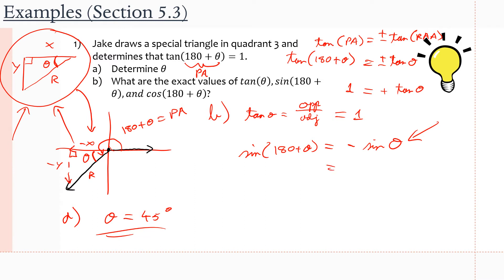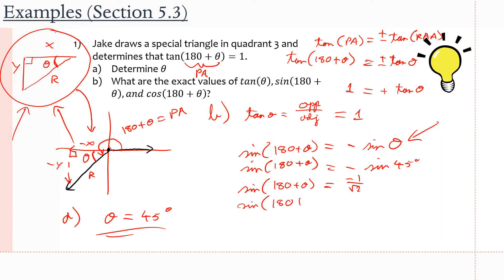So sine of (180 + θ) equals negative sine of 45°. If we remember our special triangle, sine of 45° is 1 over √2, but we have a negative sign, so we get negative 1 over √2. Multiplying by √2 over √2 gives us negative √2 over 2. That is sine of (180 + θ).